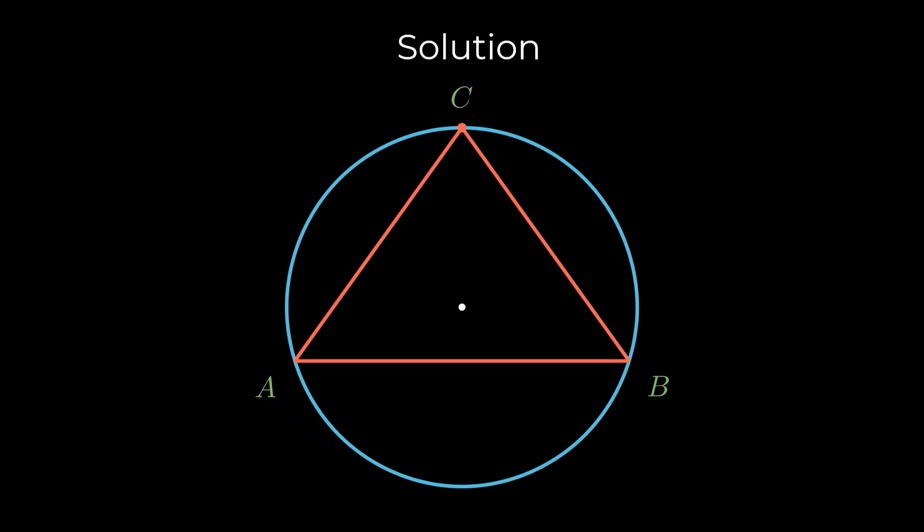Now let's calculate the probability that the center of the circle lies inside the triangle. Without loss of generality, we can fix the first point here. Let C be the circumference of the circle.